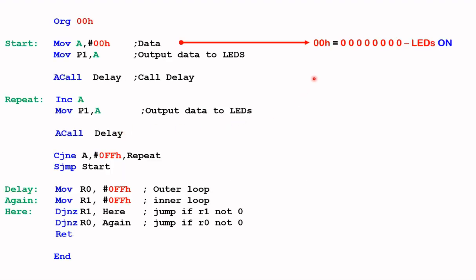Just to remind ourselves, on the EdSim51 the way the LED is connected, a zero on the port pins will actually turn the LEDs on. So the first line of code here, we copy 00 hex into Register A, and then from A we copy it to Port 1. That would turn all the LEDs on, and we call the delay to hold it for a while.